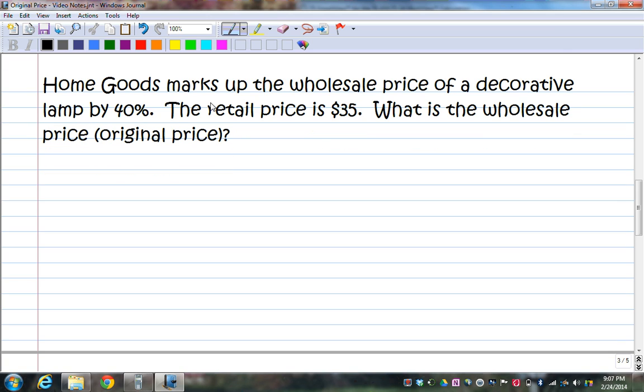Home goods marks up the wholesale price. Well, first of all, there's that key in there. It marks up the wholesale price of a decorative lamp by 40%. The retail price is $35. What is the wholesale price? You know, don't worry about wholesale retail because it says marks up right there. And we're looking to find original price. It's given to us right there. So, it's a markup. So I take 100 plus the percent that it was marked up. And I'm going to put it over 100. And that's going to be equal to A, which is $35. And we're always solving for B, always.